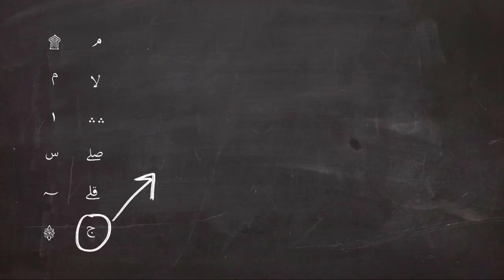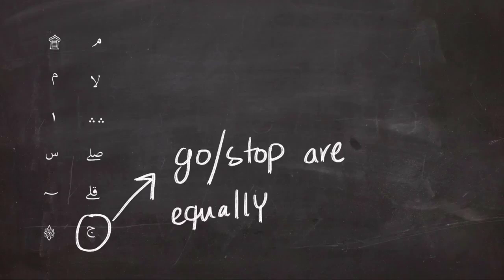Next is the sign of jim, and jim gives you 50/50 percentage of going or stopping. They are equally the same.